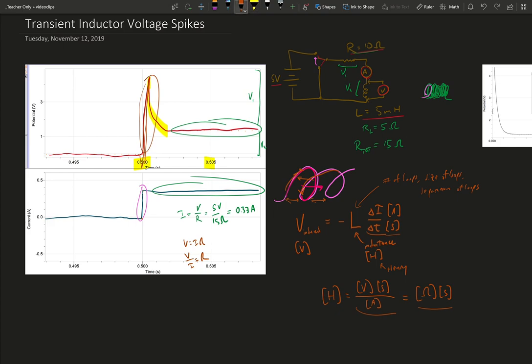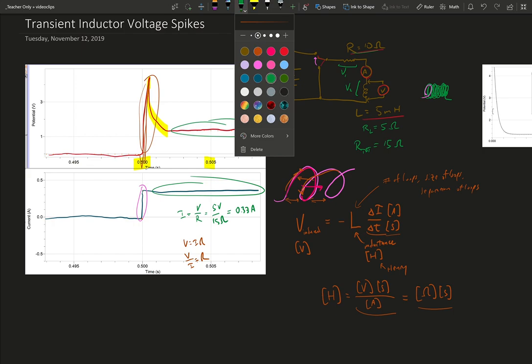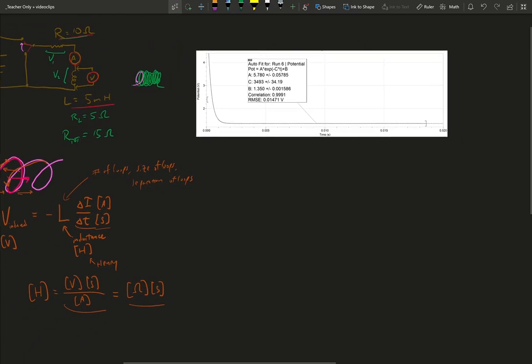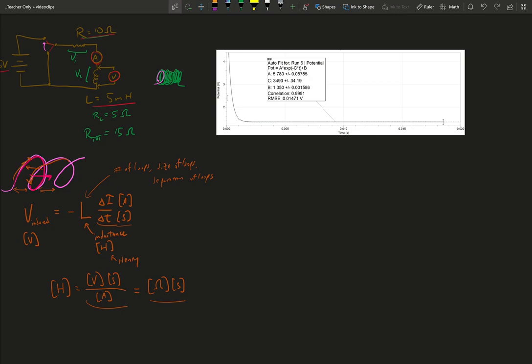So the decay should look a little familiar. It has this characteristic exponential decay shape. So let's go over here. I have a sample where we looked at a little bit of a decay. This was one of the triggered runs.